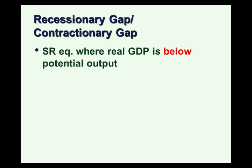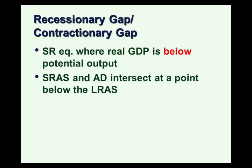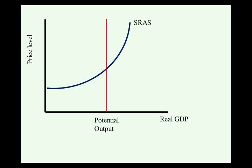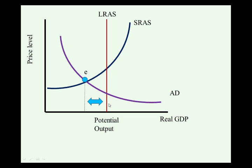Now let's look at a gap from the other side — a recessionary gap or contractionary gap. This is a short run equilibrium where real GDP is below potential output. The short run aggregate supply curve intersects the aggregate demand curve at a point below the long run aggregate supply curve. This is characterized by cyclical unemployment, and low or negative GDP growth characterizes a recessionary gap. The aggregate demand curve intersects to the left of potential output, and unemployment would be well above the natural rate — an undesirable macroeconomic equilibrium.